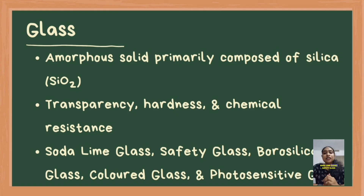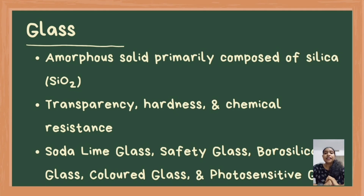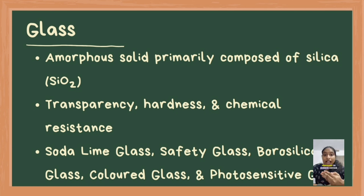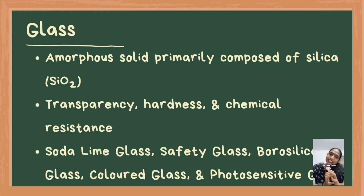Soda lime glass, safety glass, borosilicate glass, colored glass, and photosensitive glass — these are different types of glass. Each type is made with specific compositions and manufacturing processes to achieve certain properties, making them suitable for various applications. Let's see each.